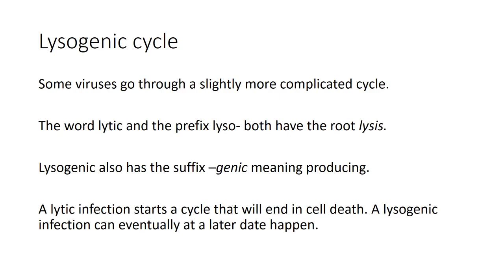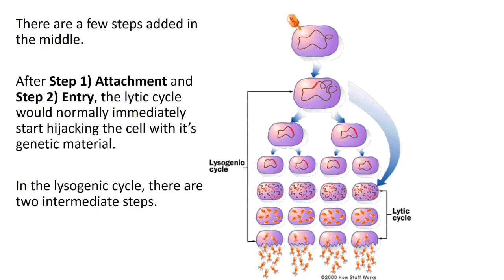Those five steps are: attachment, entry, replication, construction, and lysis — then we wait until we get another opportunity for attachment. There is a slightly more complicated cycle that adds on a little bit — the lysogenic cycle. That 'lyso' is the same root from lytic, and the suffix '-genic' means producing. In the lytic cycle, we go straight to cell death. In the lysogenic cycle, it will also produce cell death, but there is a pause step in the middle where we wait.